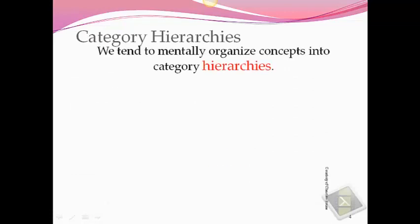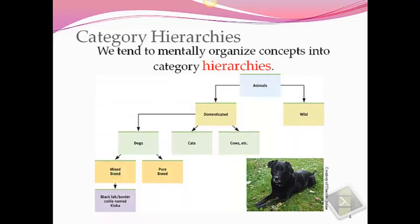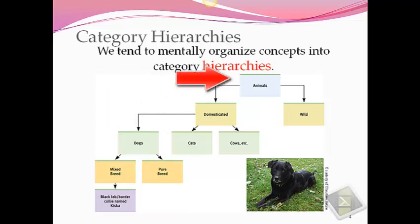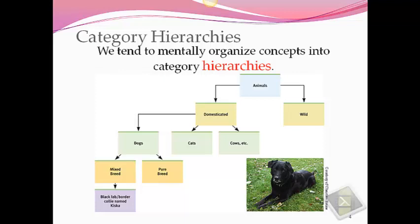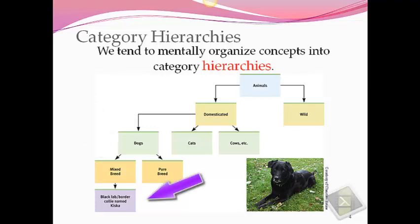Category hierarchies. We tend to mentally organize our concepts into something called category hierarchies. Remember, this isn't a place in the brain — it's really a process that the brain goes through. Hierarchies are basically organizing our concepts from very general concepts to ever more specific ones. In this example, we can go from animals, a very general concept, to slightly more specific concepts: domesticated and wild. Under domesticated animals, we might think of dogs, cats, or — since it's Wisconsin — maybe cows. We could then narrow each concept down even further: for dogs, mixed breeds or purebred, and under mixed breeds, black labs, border collies, etc. So our concepts are organized from simple and general to ever more specific.